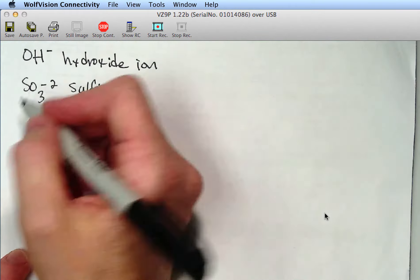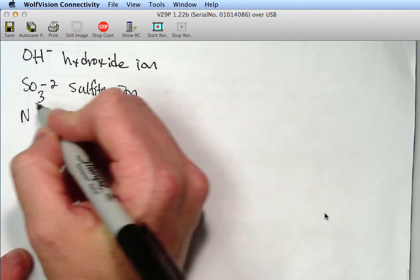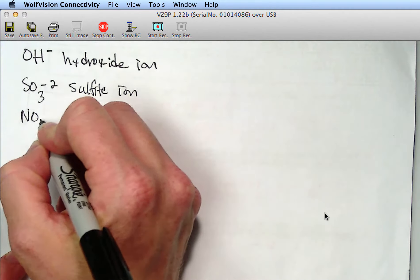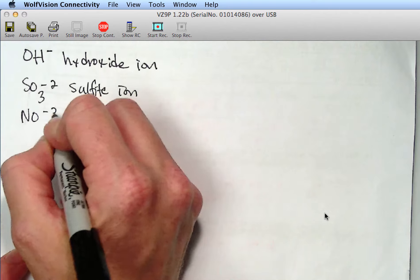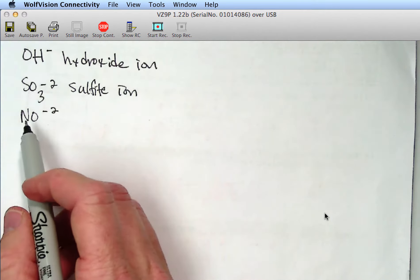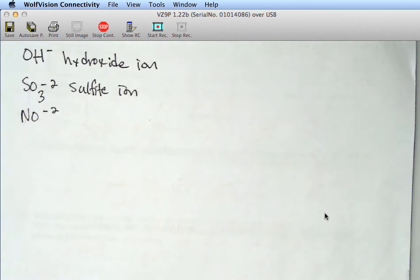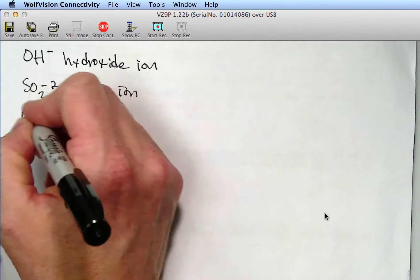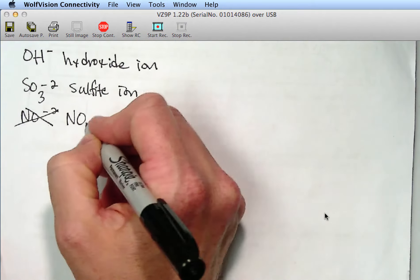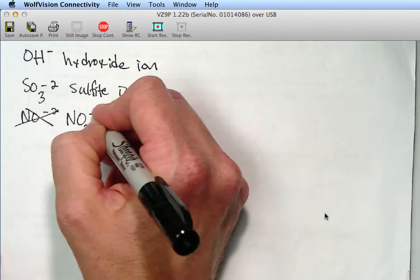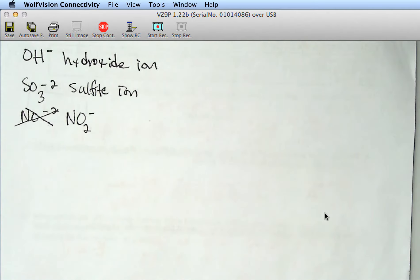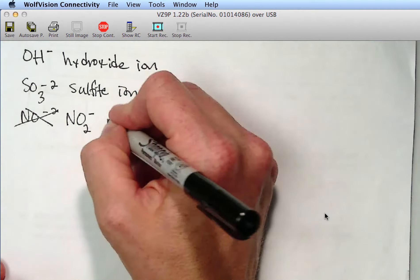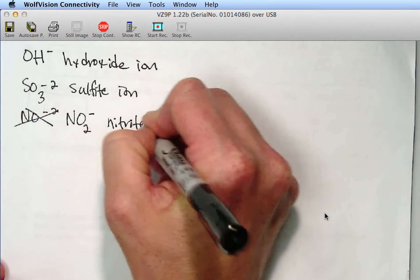All right, what else? Nitrite. Nitrite, which is? NO2. NO2. Is that the - just? The negative, like? Ah, yes. So it's NO2^-1. So this is nitrite ion.